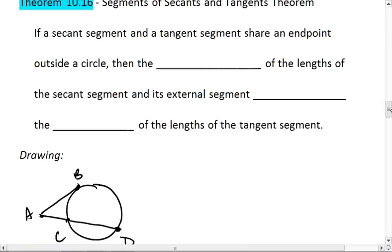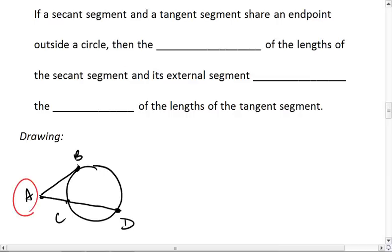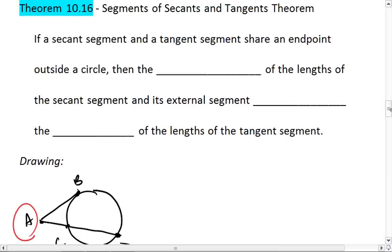All right, and what this theorem tells us is that if a secant segment and a tangent segment share an endpoint, which is what we have down here with point A, outside a circle, then the product of the lengths of the secant segment and its external segment equal the square of the lengths of the tangent segment.